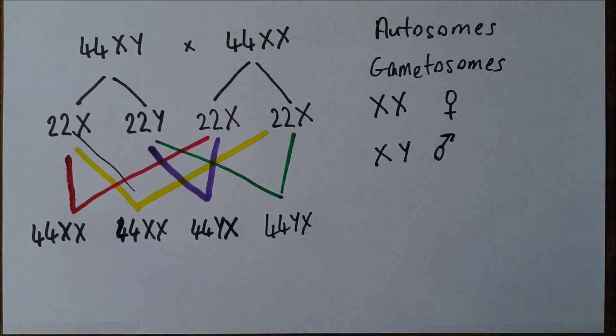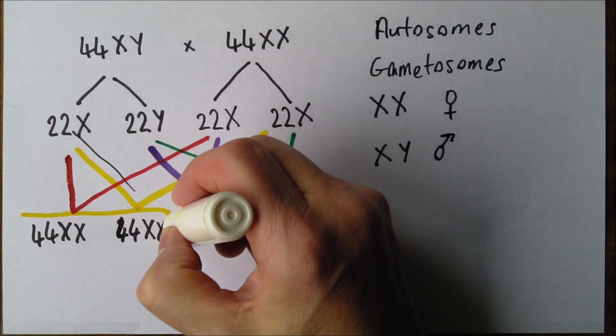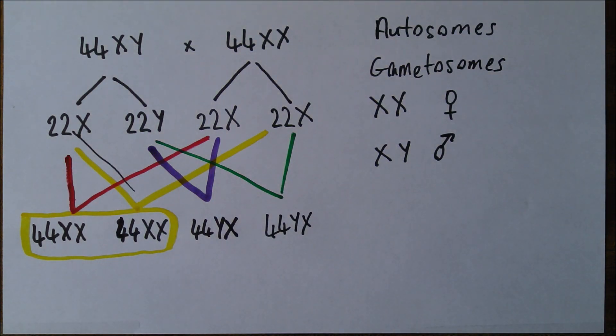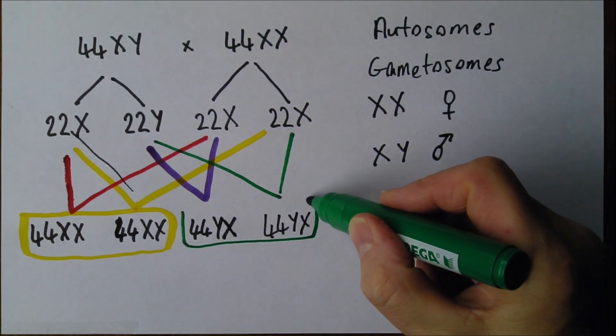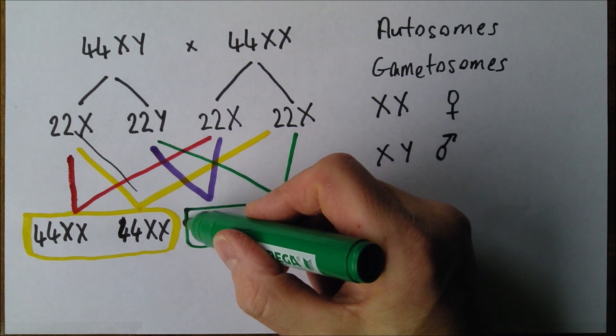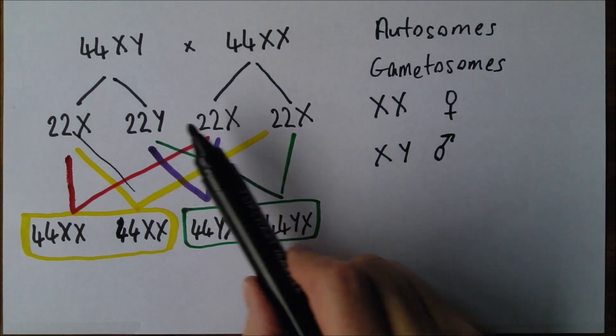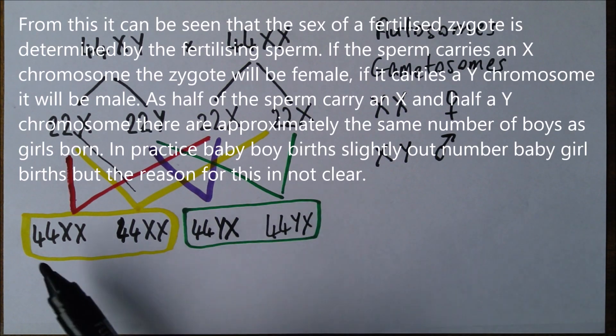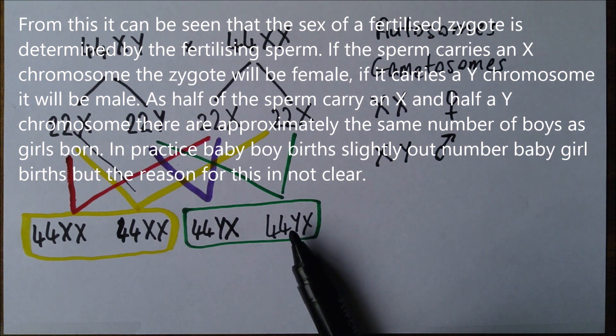So that means there's a 50% chance we're going to get a baby girl, and there is an equal 50% chance we're going to get a baby boy. So determination of sex is relatively straightforward. In essence, it's determined by whether the fertilizing sperm carries the X or carries the Y chromosome. So on average, we would expect 50% girls, 50% boys to be born, and long may it remain so.